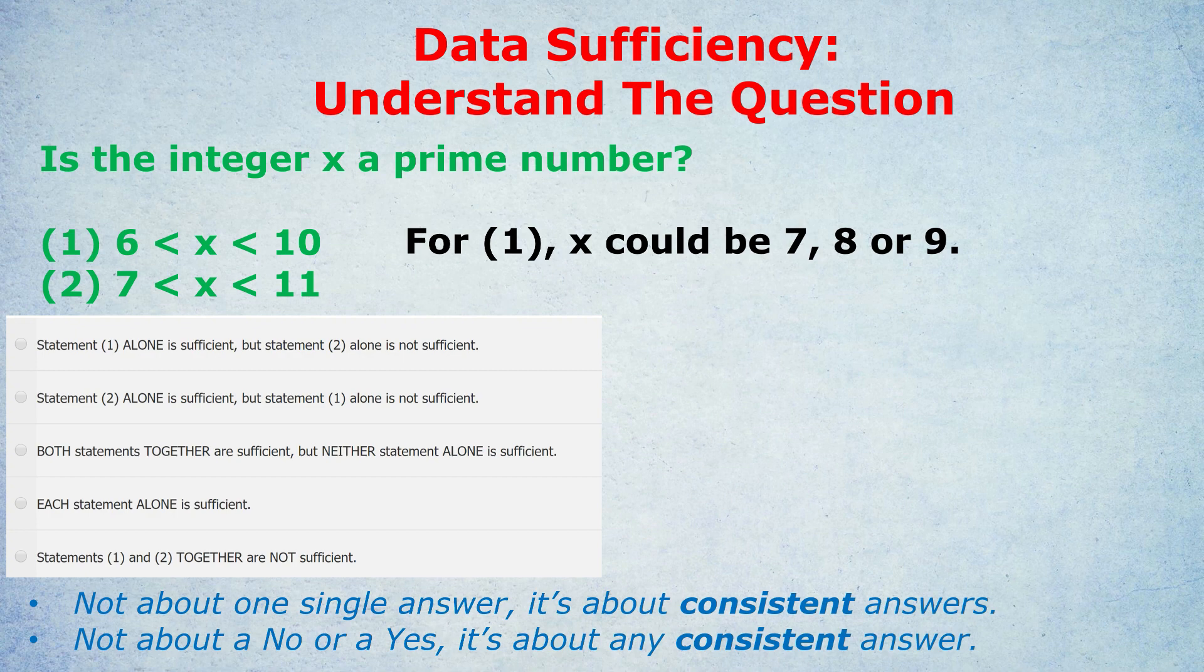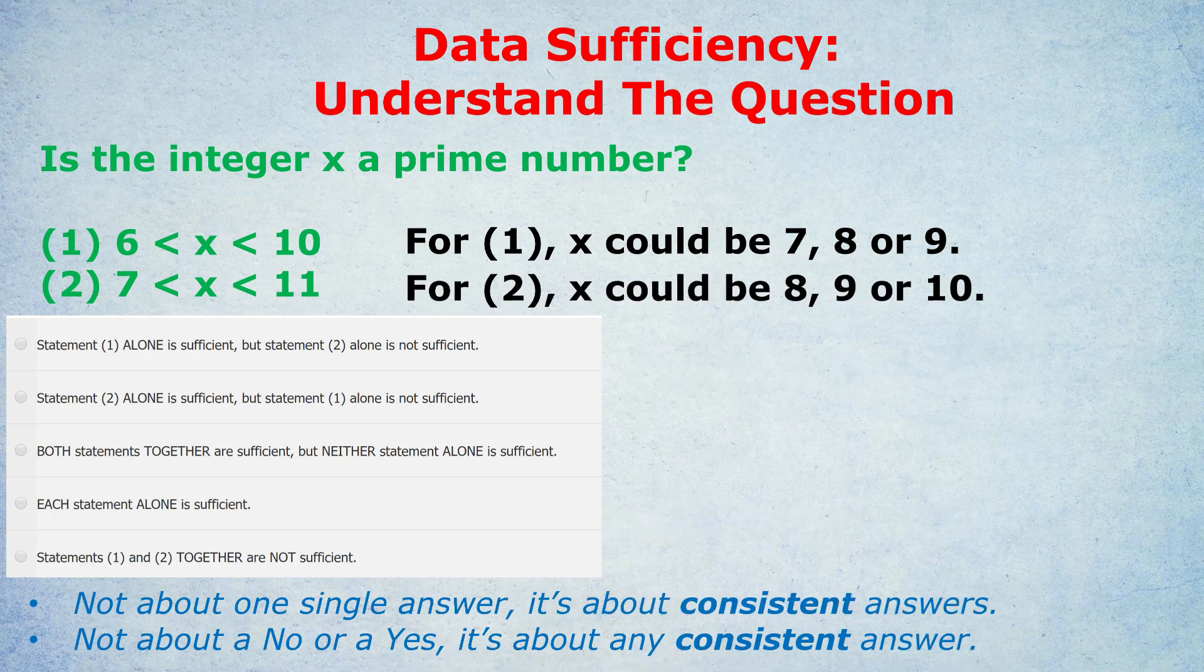Prime number, I've done a separate video on that. It's just a number that can't be divided by anything except itself and 1. You should memorize the first 10 prime numbers. Anyway, we don't have a consistent answer here. Sometimes x is a prime number, like with 7. Sometimes it's not, like with 8 or 9. So this statement is insufficient. But it's not insufficient because there are three answers.